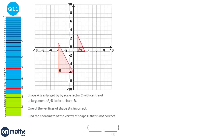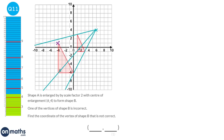The centre of enlargement is at 6, 4. I draw ray lines from the centre of enlargement through each corner of shape A to check whether they pass through the corners of shape B. Two corners check out, but one does not. The question asks for the coordinate of the incorrect vertex of shape B, which is minus 4, 1.